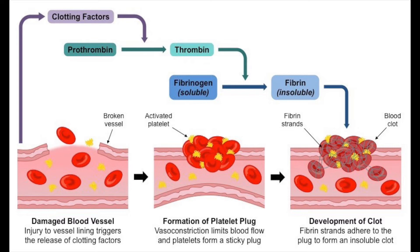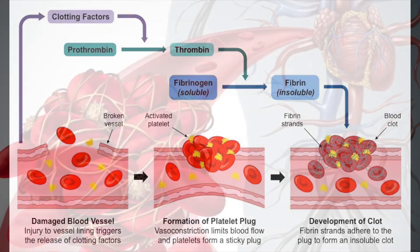It is also interesting to note that the production of thrombin also results in one of the key vascular changes that we see in acute inflammation, which is platelet activation via protease-activated receptors, or PAR.